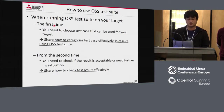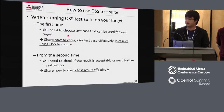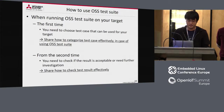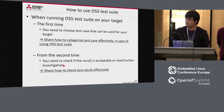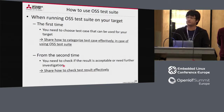I will share how to use test suites easily, including how to choose and categorize test cases using LTP as an example. When running an OSS test suite on your target for the first time, you need to choose test cases that can be used for your target — meaning you choose proper test cases for your target. I will share how to categorize test cases for choosing proper ones. When you run the OSS test suite from the second time onward, you need to check if the result is acceptable or not, meaning you need further investigation. I will share how to check and judge the test result from the second time.